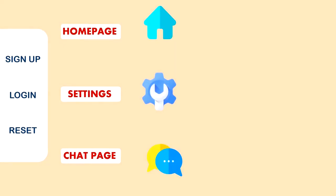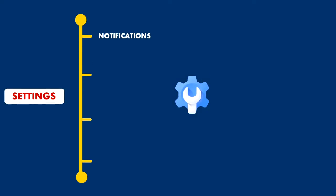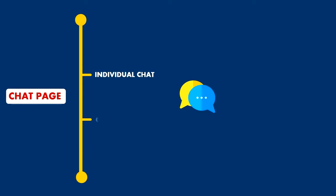On the settings page, you can turn notifications on or off, access the about and user guide sections, and log out safely. In the chat section, there are individual chats and group chats. You can create new groups and discuss projects with teammates without needing multiple applications.